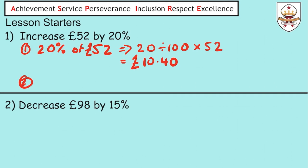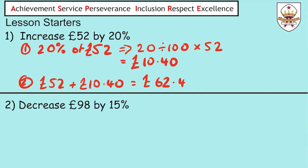Remember, we're increasing £52 by 20%, so we're going to take our amount of money — £52, the original amount — and add on the equivalent of 20%, which is £10.40. It gives us an answer of £62.40.